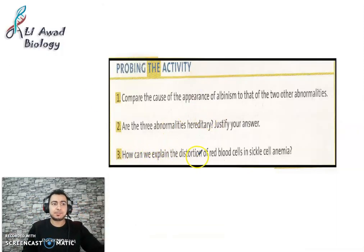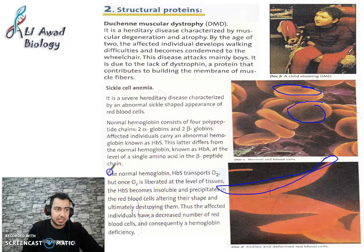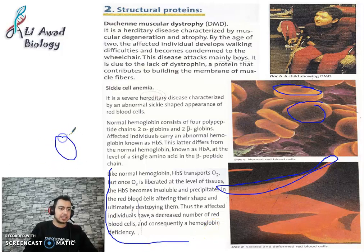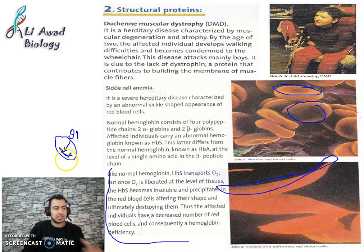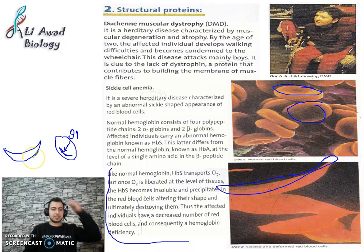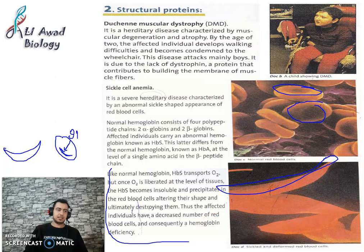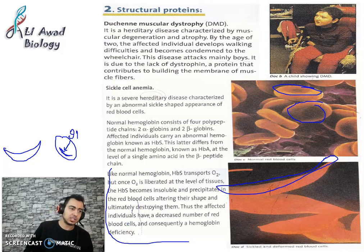How can you explain the distortion of red blood cells in sickle cell anemia? The red blood cell carries oxygen using abnormal hemoglobin. When it carries oxygen, the hemoglobin precipitates inside the cell, forming a compound called oxy-hemoglobin that precipitates and causes the red blood cell to become distorted and deformed into the sickle shape. See you in the next video — please subscribe to this channel for more support.